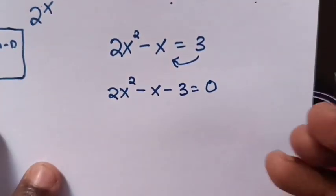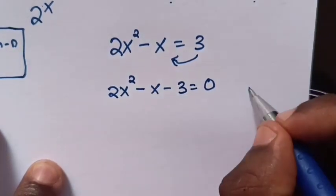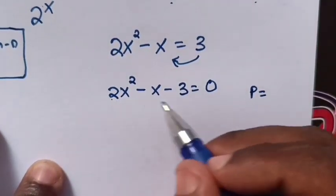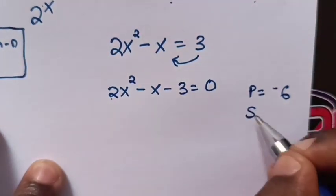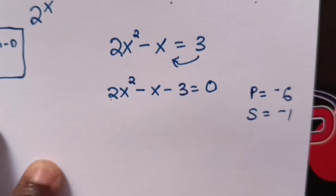Now next step, we factorize this quadratic equation, whereas the product is equal to 2 times negative 3 is negative 6, and the sum is equal to negative 1.